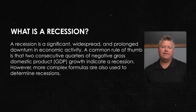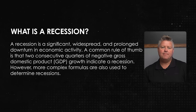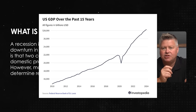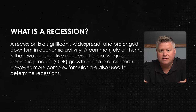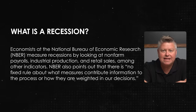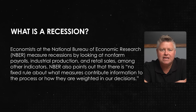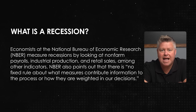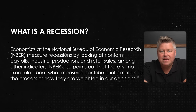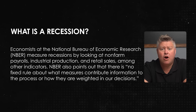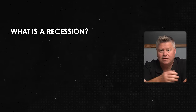A recession is significant, widespread, and prolonged — a prolonged downturn in economic activity. A common rule of thumb is that two consecutive quarters of negative gross domestic product, or GDP, growth indicate a recession. However, more complex formulas are also used. Economists at the National Bureau of Economic Research, or NBER, measure recessions by looking at non-farm payrolls, industrial production, and retail sales, among other indicators. The NBER also points out that there is no fixed rule about what measures contribute to information to process or how they are weighted in their decisions — that's an actual quote from them.